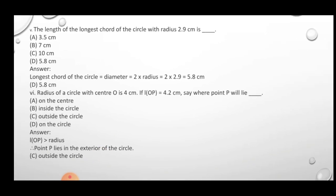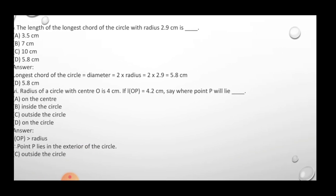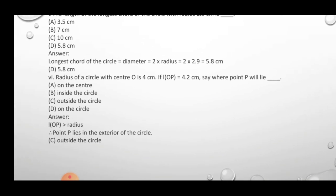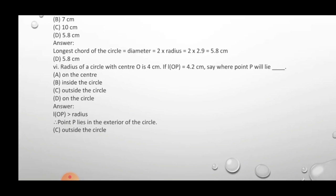Question 5: Find the longest chord of a circle with radius 2.9 cm. The longest chord of a circle is the diameter, and diameter = 2 × radius = 2 × 2.9 = 5.8 cm. Correct option is 5.8 cm.